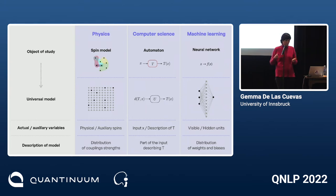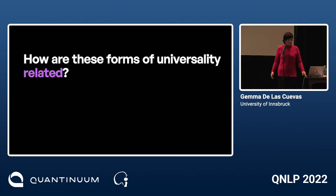For example, there's a full characterization of universal spin models, but there's no such thing for universal Turing machines. Probably because they are different — that's what I would like to understand: how are they related?